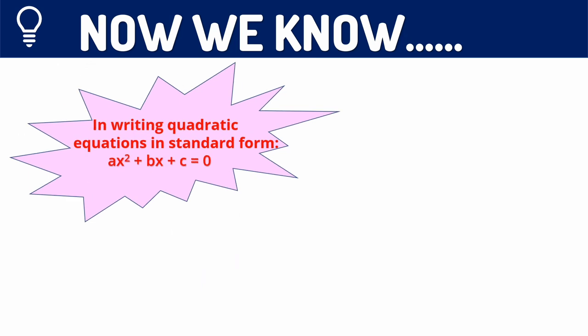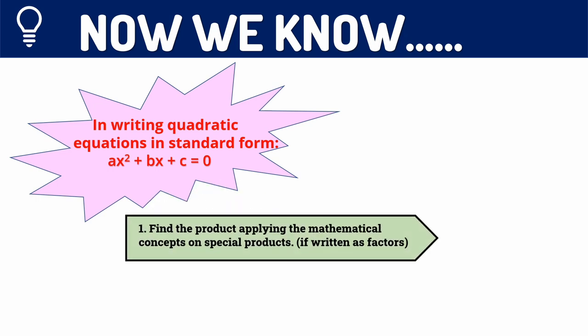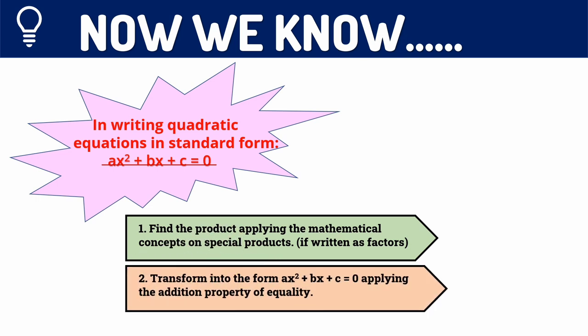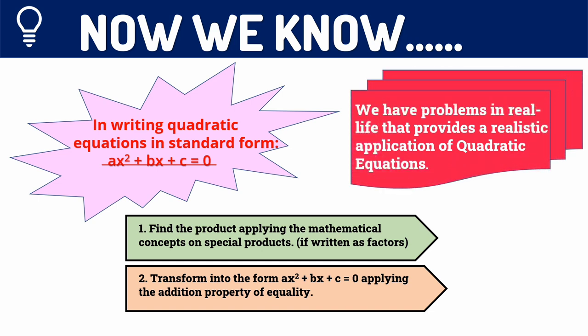In summary, to write a quadratic equation in standard form: first, find the product by applying the distributive property if the equation is in factored form. Then transform it into the form ax² + bx + c = 0 by applying the addition property of equality. Remember that there are real life problems that provide realistic applications of quadratic equations. I hope you learned from today's video. In our next video, we will learn how to solve for the value of x in a quadratic equation. See you next time!